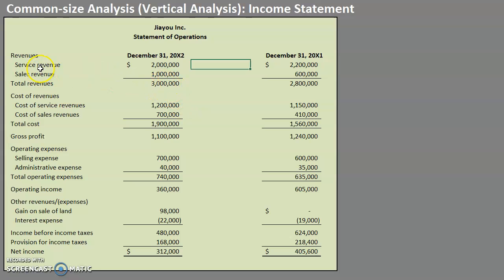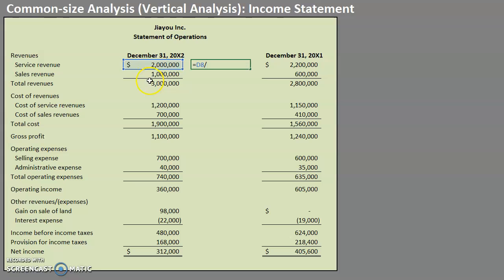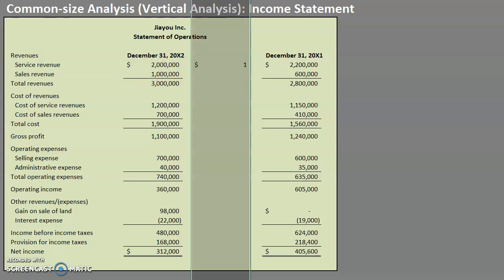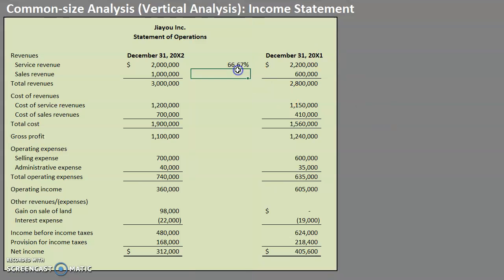This company has two revenue categories, but what we are focused on is total revenues. For example, I want to know how much service revenue is as a percentage of total revenue. So I take service revenue and divide it by total revenues, and I find that service revenue is essentially two-thirds of that amount.